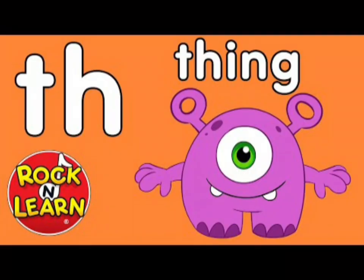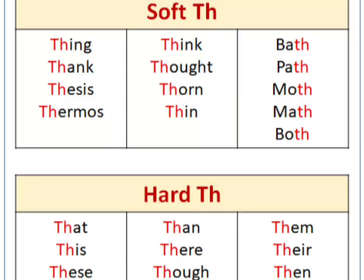Our next sound is TH. TH says TH, and there are two sounds for these letters. One is the soft TH and one is the hard TH. The soft TH appears in words like: thing, thank, think, thought. The hard TH appears in words like: the, that, this, these, then, there.